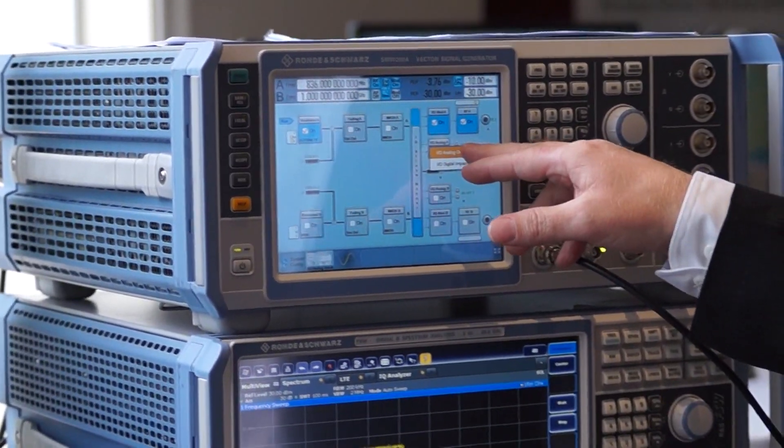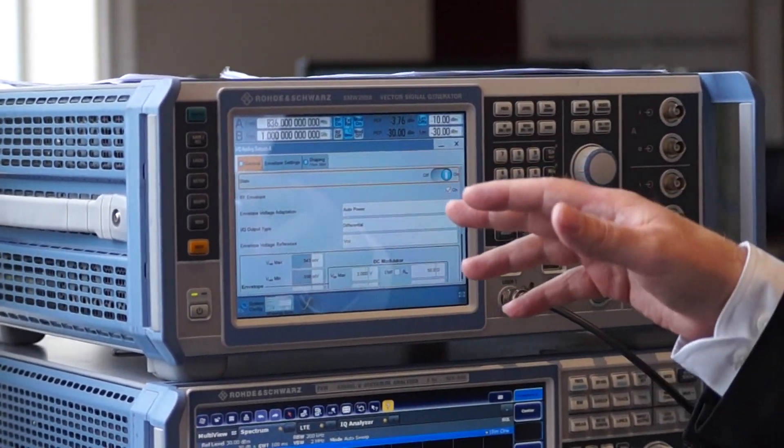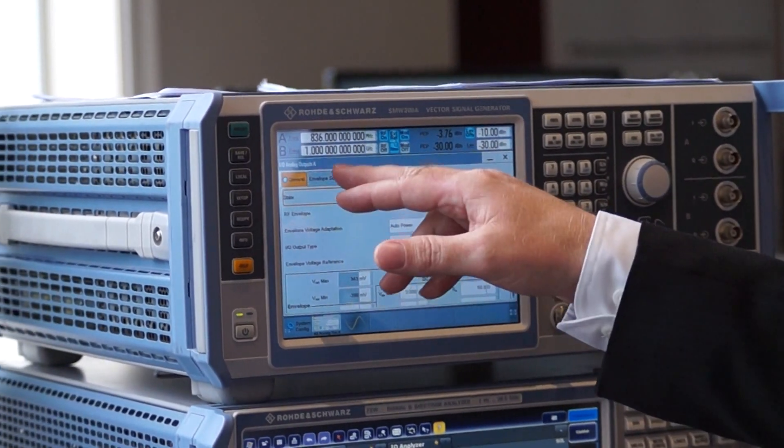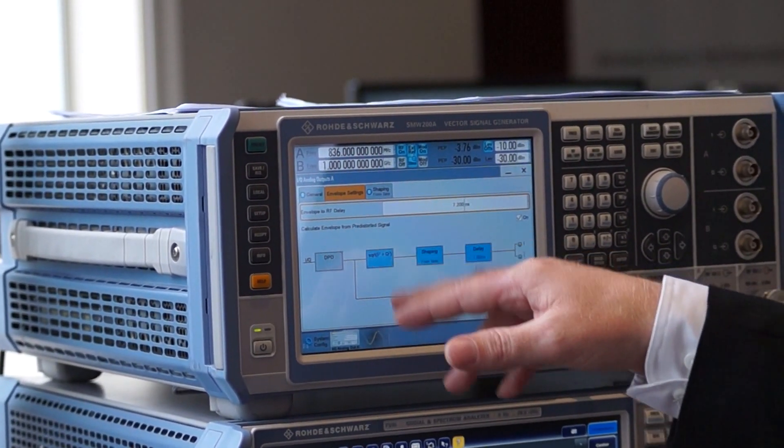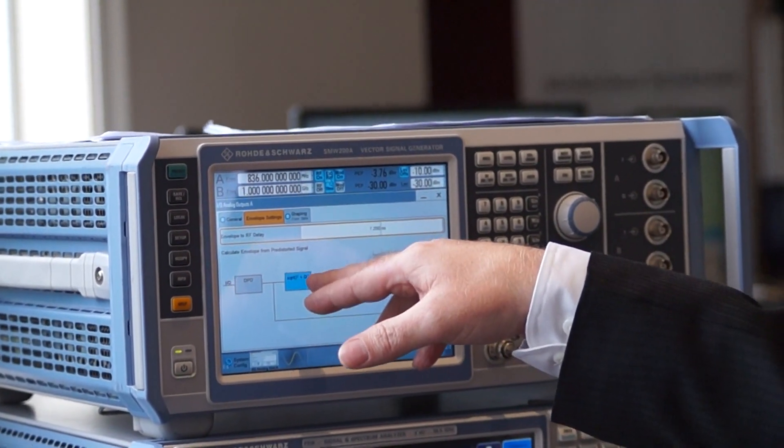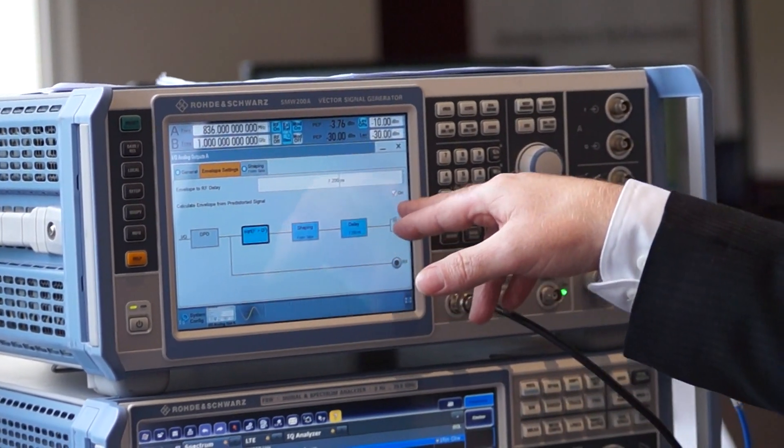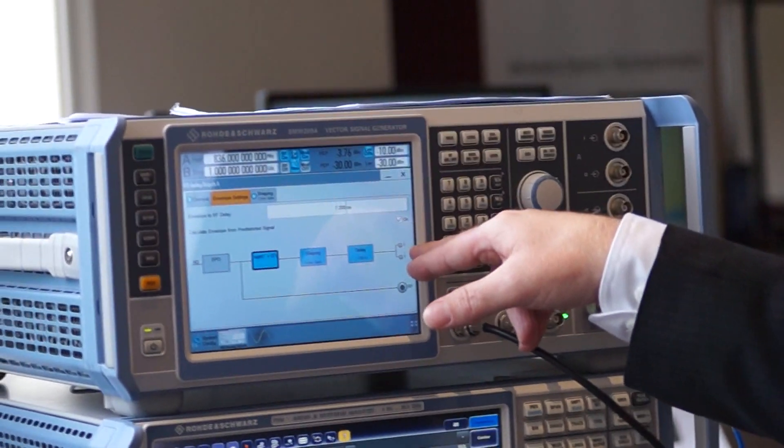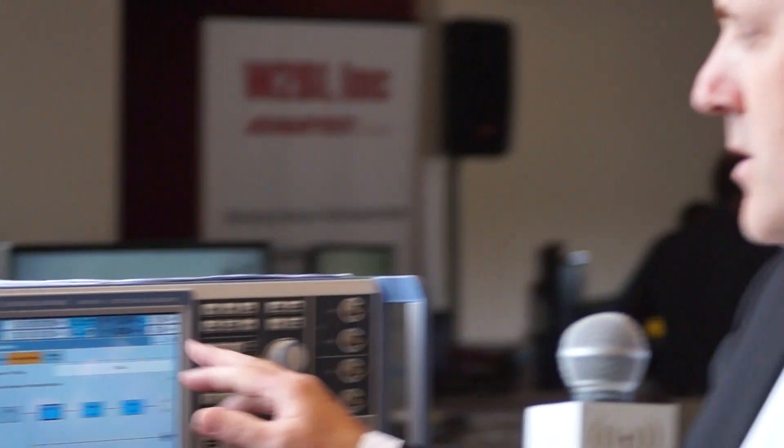For envelope tracking, we start with an IQ baseband signal, and in order to provide the envelope, we take the magnitude of that, square root of I squared plus Q squared. We take that signal, calculate it, and apply that to some differential outputs on the generator. That's the first thing.